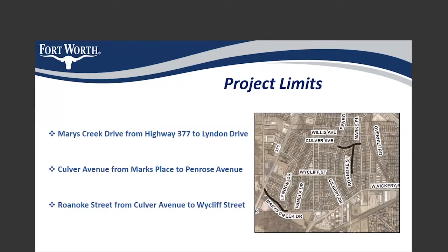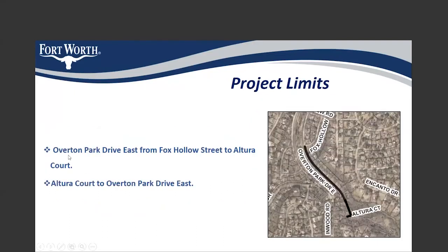In this project, we have five streets as following: Nearest Creek Drive from Highway 377 to Linden Drive; Culver Avenue from Mark's Place to Benrose Avenue; Roanoke Street from Culver Avenue to Wycliffe Street; Overton Park Drive East from Fox Hollow to Altura Court; and Altura Court to the intersection of Overton Park.